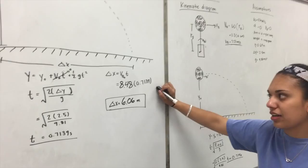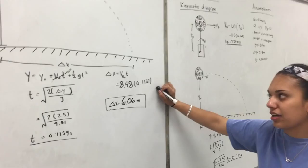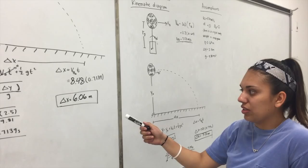And then when you plug that into delta X equals VB naught times T, you get delta X equals 6.06 meters.